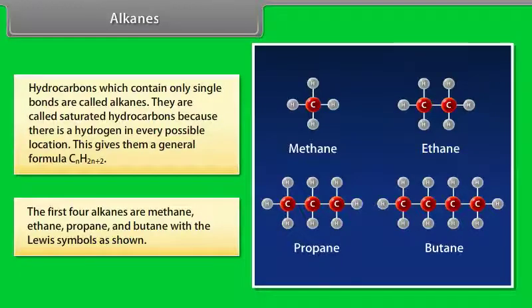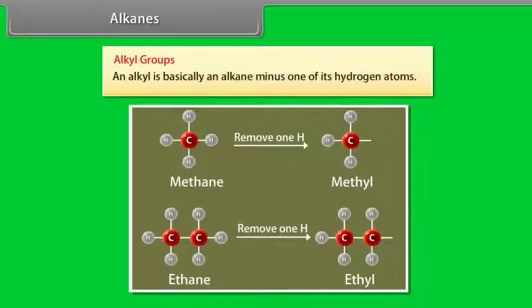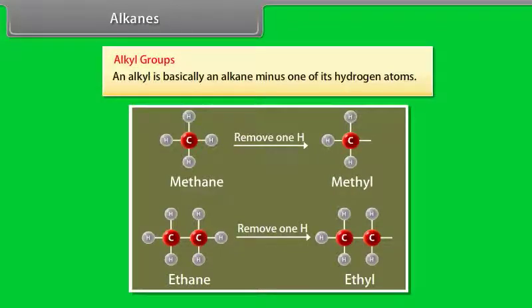Alkyl groups: An alkyl is basically an alkane minus one of its hydrogen atoms. For example, if methane removes one hydrogen, we will get methyl. Similarly, if ethane removes one hydrogen, we will get ethyl.